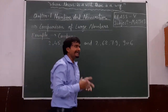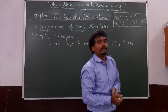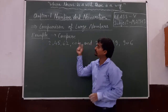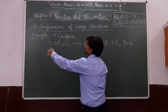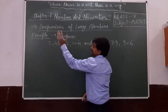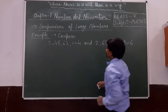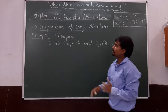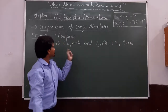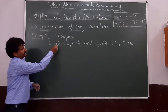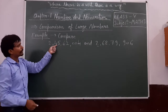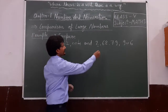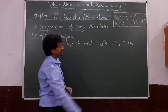So we will move to the next step. That step is: compare the digits of both the numerals from the left side. In this number, the leftmost digit is 2, and in this number the leftmost digit is also 2. So move to the next digit. The digit at this place is 4, and in this number the digit at this place is 6.